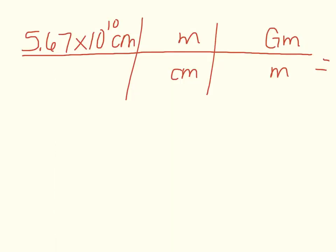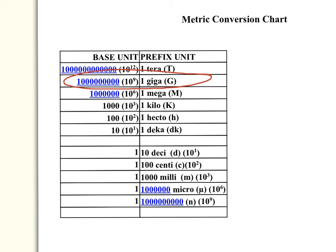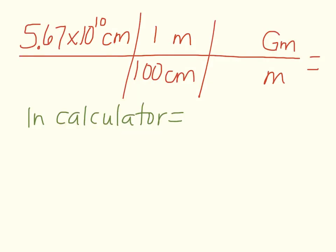For the first step, 1 goes with the base unit and 100 goes with the centimeter unit. Now looking at the conversion chart for meters to gigameters, we refer to the giga row: a 1 goes with the prefix unit gigameter, and the base unit gets a very large number. Rather than writing it all out, you can write the equivalent as 1 × 10⁹. So 1 × 10⁹ goes with meters and 1 goes with gigameter. Now that units and fractions are filled into the grid, let's solve it.